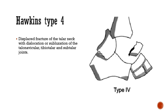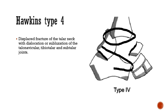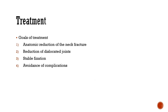In Hawkins type 4, the fracture is displaced and all three joints are dislocated — the tibiotalar joint, the subtalar (talocalcaneal) joint, and the talonavicular joint. This is the most severe type of injury.